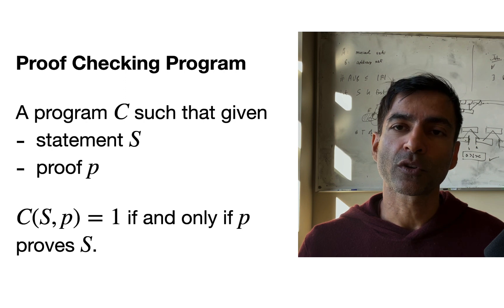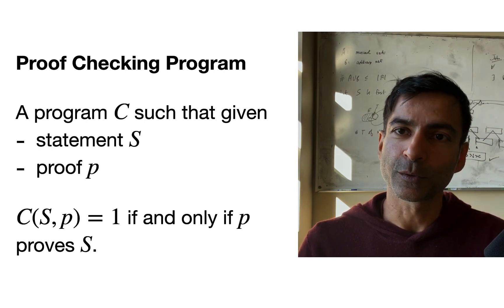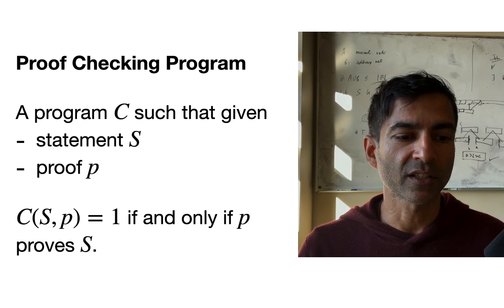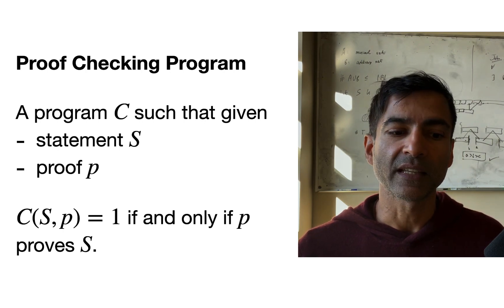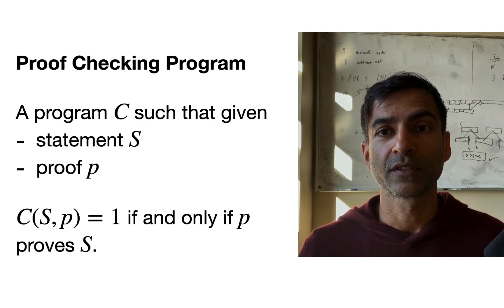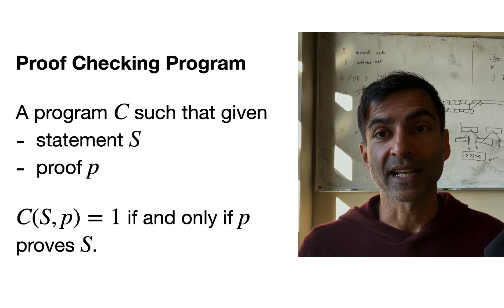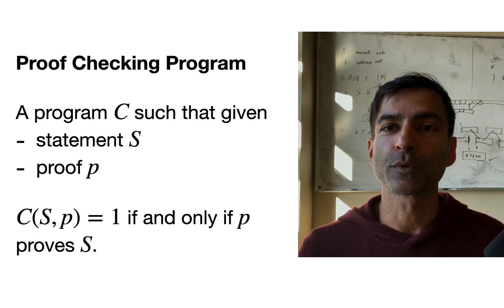Given these two inputs, the program runs, manipulates those two inputs, and does some computation on them. And eventually, it's supposed to output one if and only if P is a convincing proof that the statement S is true. Okay, so that is a proof-checking program.